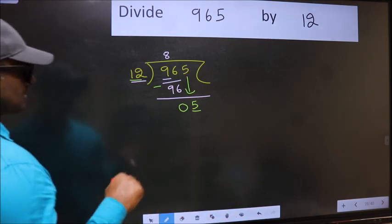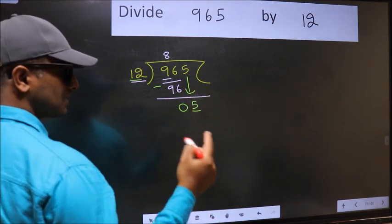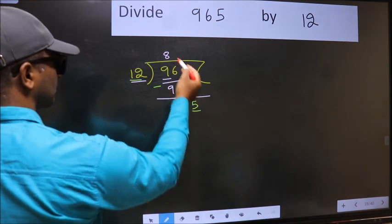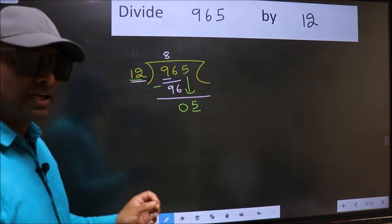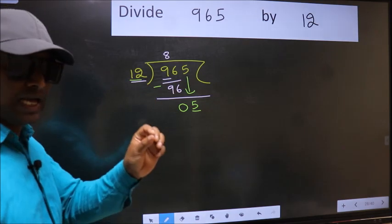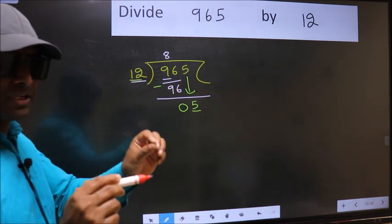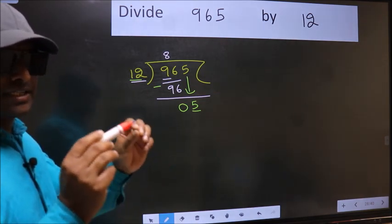Because just now you brought this number down, and in the same step you want to put a decimal point and take 0, which is wrong. I repeat: bringing the number down and putting a decimal point to take 0, both in the same step, you should not do.